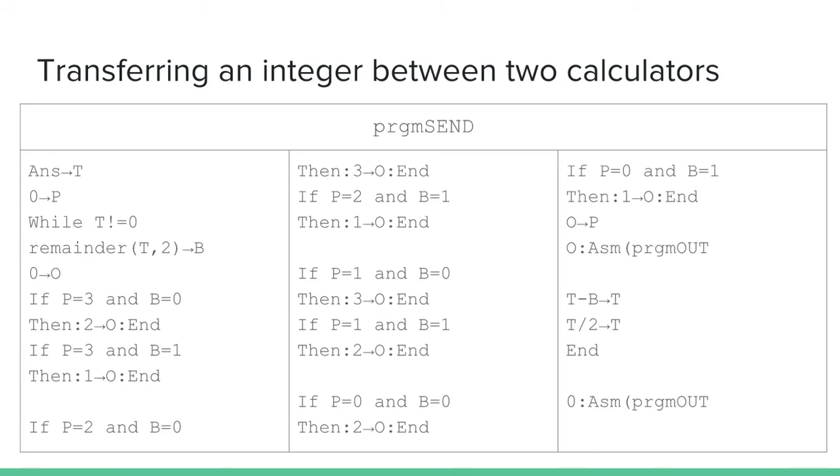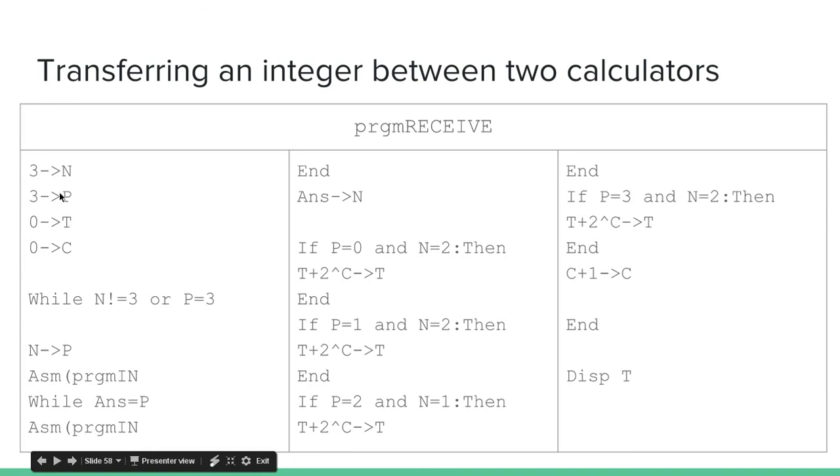So this is the code to send an integer. Essentially it just breaks the integer up. Whatever is stored in answer, it breaks that integer up and then sends each bit out. As you can see, I have a bunch of if statements, which if you look back at the previous slide, you'll see that they correspond to these if statements. On the receiving side, it's very similar, and you again have a bunch of if statements. This one works by building up an integer rather than breaking an integer down. It builds up an integer from what it's reading from the I/O port.